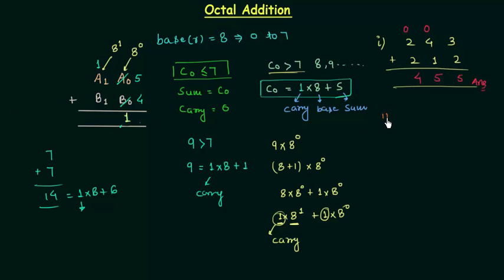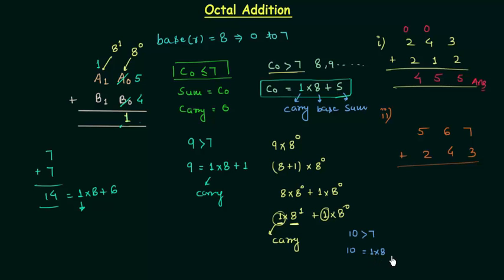Now we will move to the next example in which we have carry. The 1st octal number is 5, 6, 7 and the 2nd octal number is 2, 4, 3. 7 plus 3 is 10, and 10 is greater than 7, so we have to break 10: carry is 1 and sum is 2, giving 1 multiplied by 8 plus 2. Next, 6 plus 4 plus 1 gives us 11, and 11 is again greater than 7, so we will break 11.